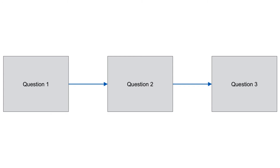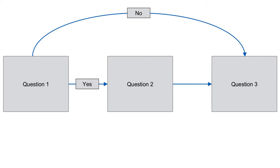In some surveys, every participant is asked every question, one after another, in a linear sequence. When a survey has skip patterns, then every participant does not necessarily answer every question. The next question a given participant is asked depends on the answer they gave to the current question. In some circumstances, questions will be skipped entirely.